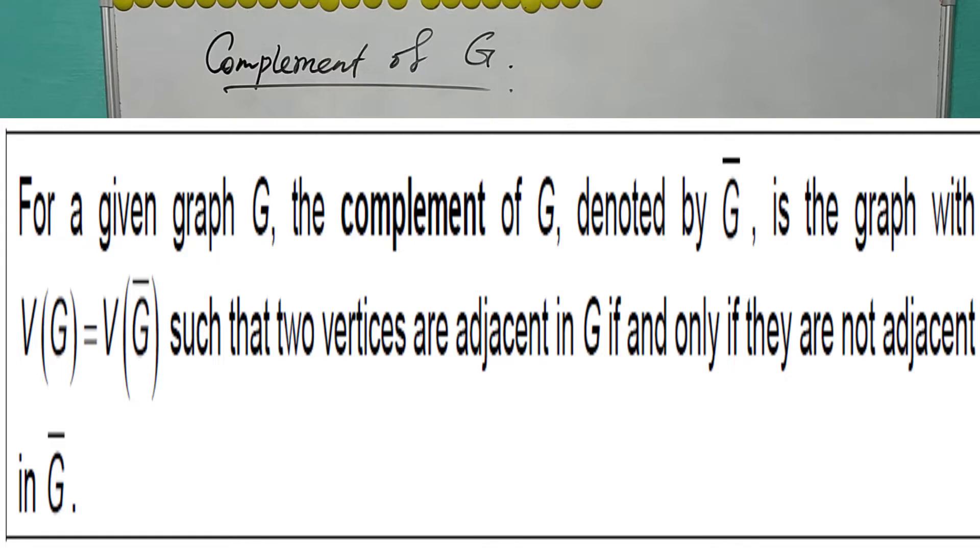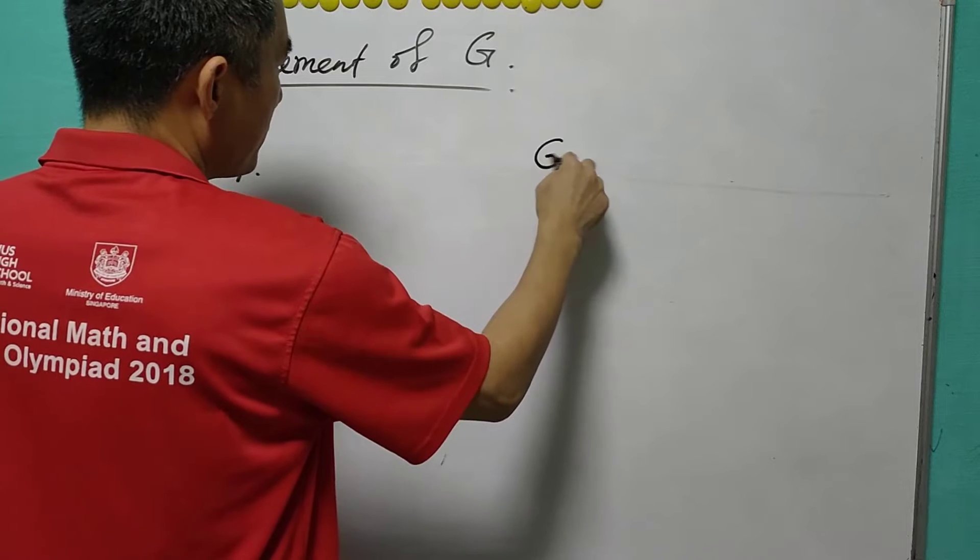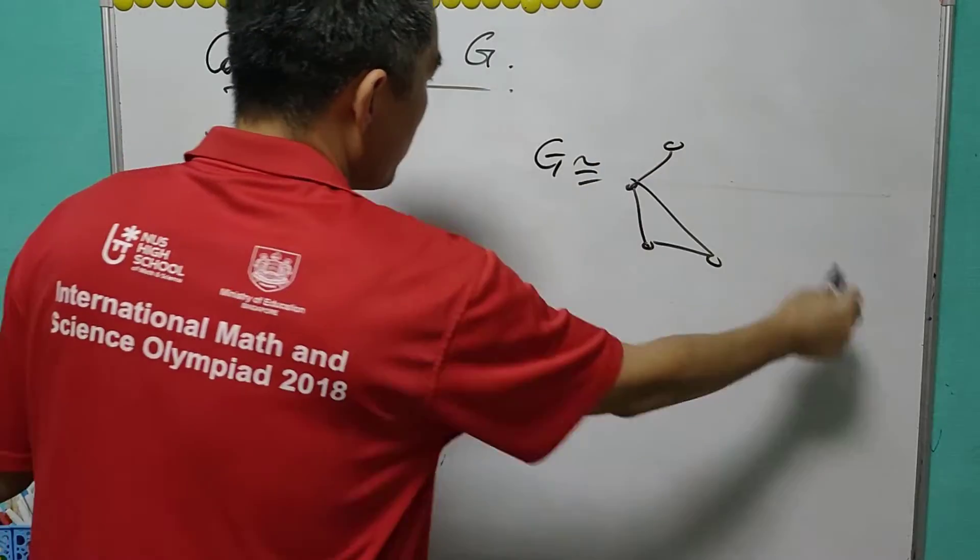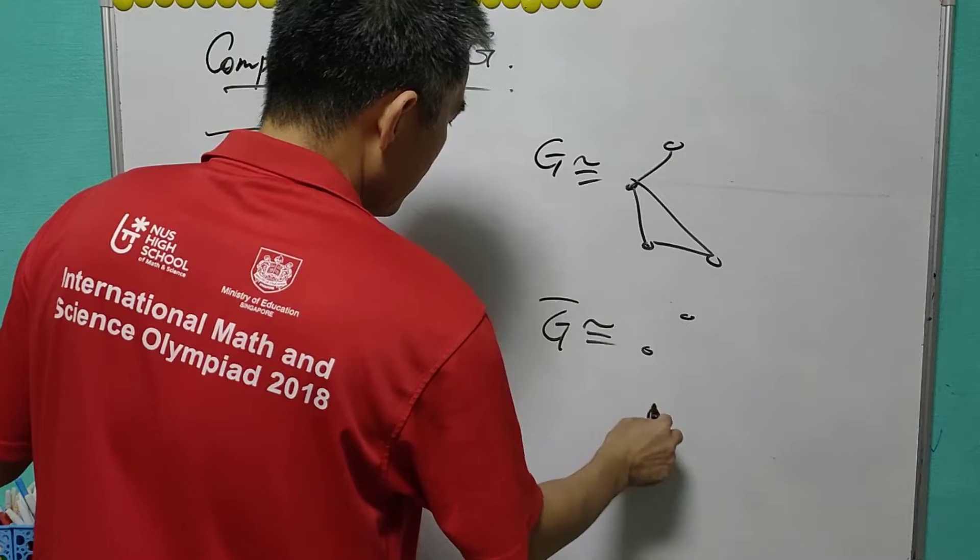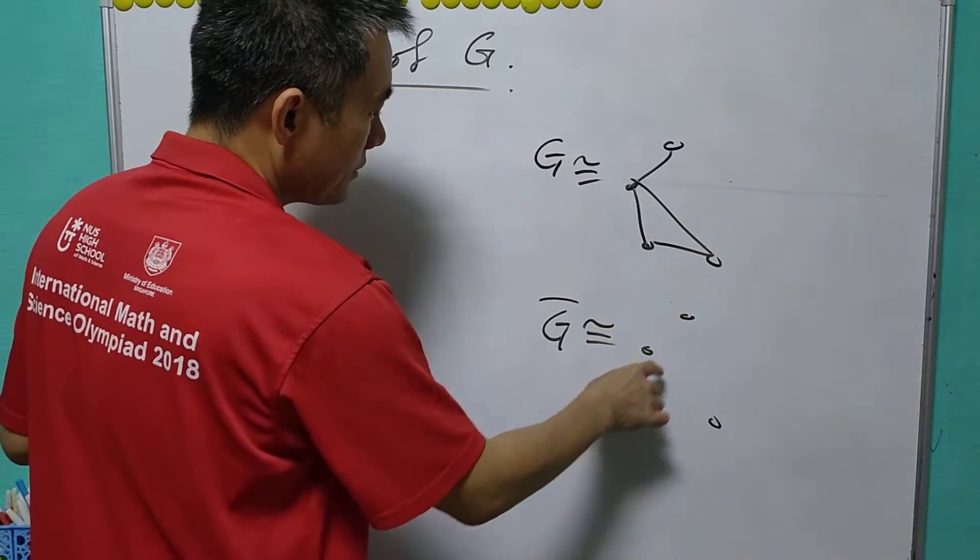For example, let's say this is G. Then we'll see that G bar will have the same vertex set. Whenever a pair of vertices are joined in G, they are not joined in G bar, and vice versa.